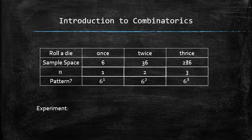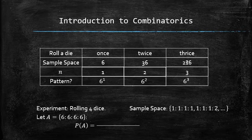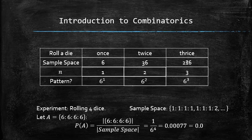Now we can roll a die four times and, without knowing exactly the size of the sample space, let A be the event in which there are four sixes. The probability of A is the number of outcomes in A divided by the size of the sample space, which we can speculate to be 6 raised to the power 4. So the probability is equal to 0.077%.